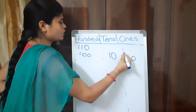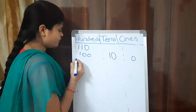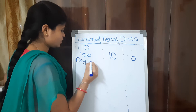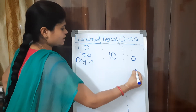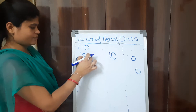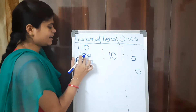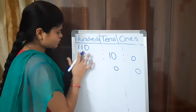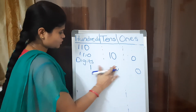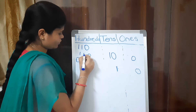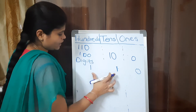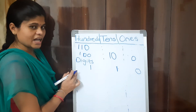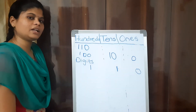Now, writing 110 in digits: take whatever number is in each place and write it there. So we write 0 in 1s place, 1 in 10s place, and 1 in 100s place — giving us 110. What is the number name of 110?